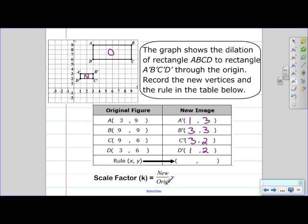So let's try C. So if we take C, our new C is at 3 and our original C is at 9. And so that would simplify to 1/3.